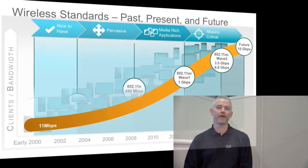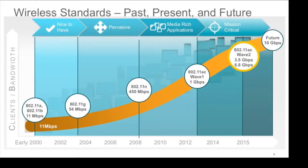I want to talk briefly about the wireless environment. Wireless has been moving rapidly. A few years ago, wireless was a nice-to-have thing. These days wireless has become pervasive, has moved into rich media and is now becoming mission-critical. Wireless has evolved from 11 megabits per second, 3G at 54, 11N at 450. We're now up to 11AC Wave 1 at a gigabit, and Wave 2 is coming — looking at 3.4 or 6.8 gigabits per second, and in the future up to 10 gig.